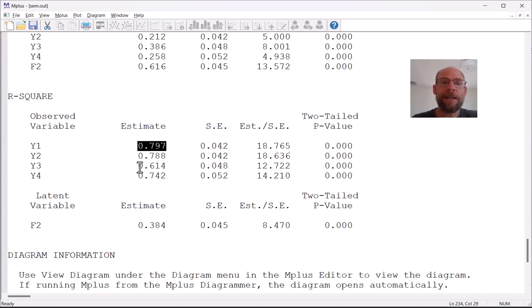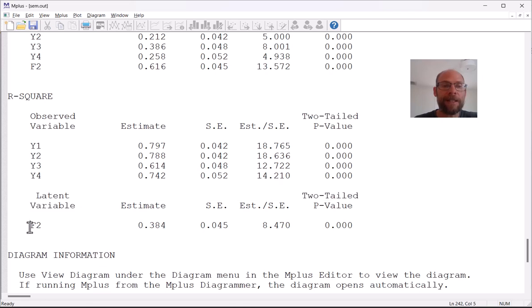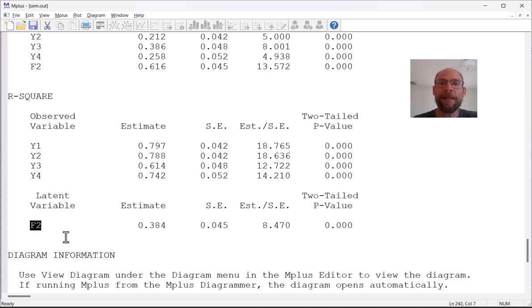And so here you can see that the reliabilities range between 0.614 and 0.797. So between about 61% and 80% of the observed variance is true score variance or reflects true inter-individual differences and so that shows that these measures are fairly reliable.